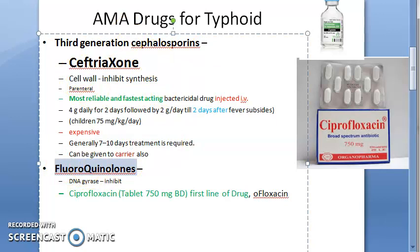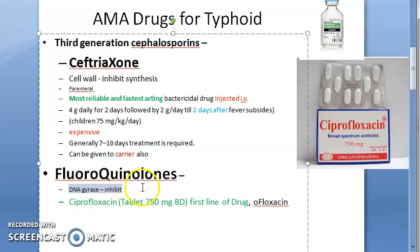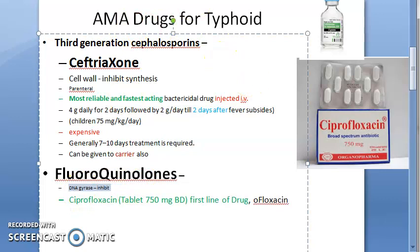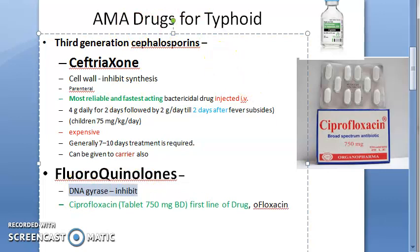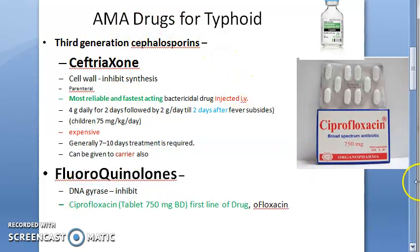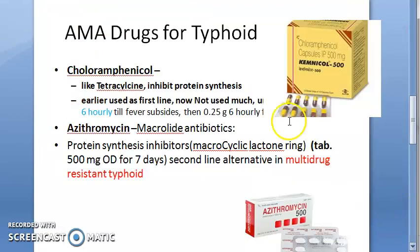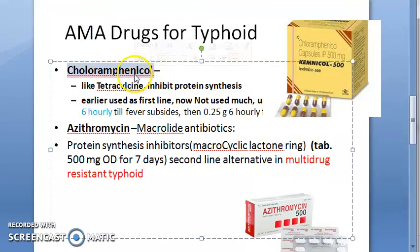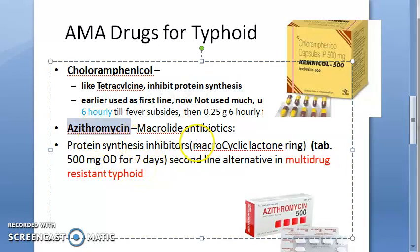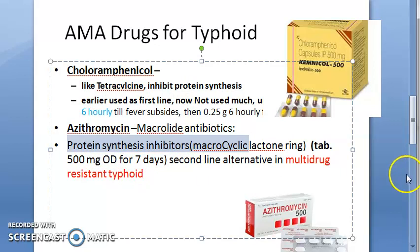Fluoroquinolones work by DNA gyrase inhibition. Chloramphenicol inhibits protein synthesis, just like tetracycline. Azithromycin is a macrolide antibiotic and also inhibits protein synthesis.